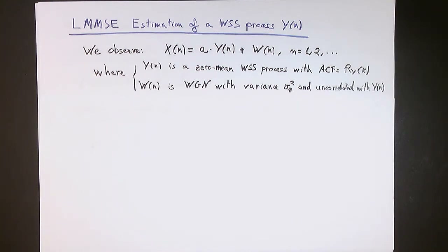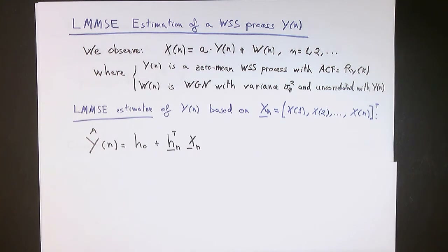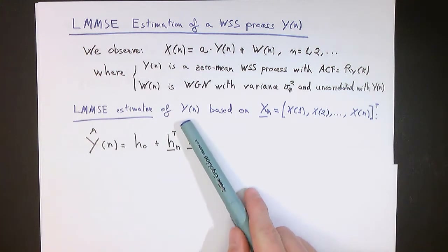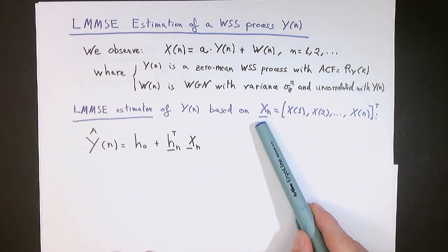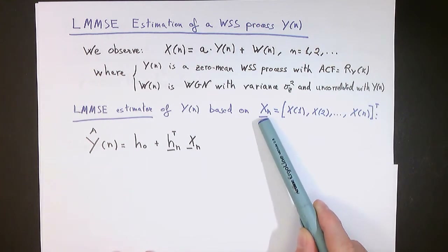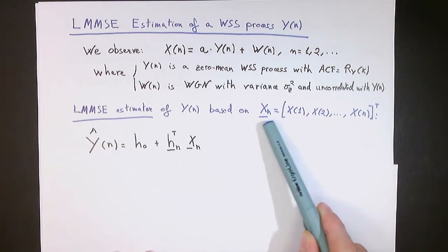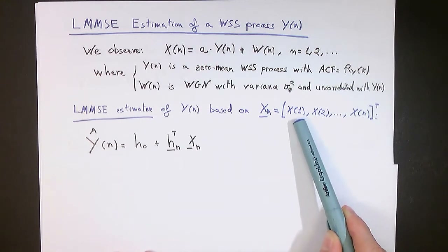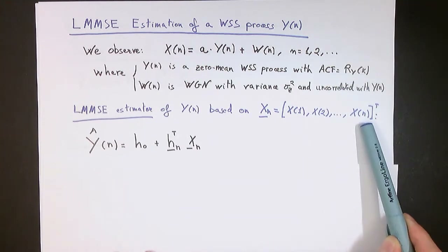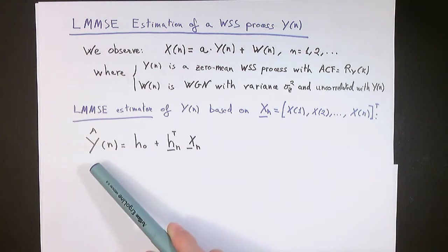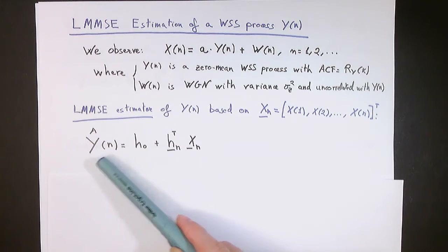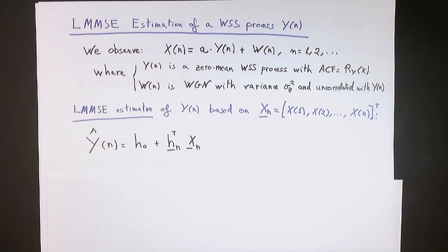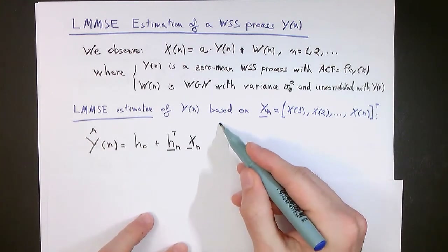Imagine that at a given time n, we would like to obtain the LMMSE estimate of the nth sample of the process y, based on the observations of all samples of the process x up to that time. We collect all the observations of x into one vector called x of n, which contains all the samples from x of 1 to x of n. As we already know from LMMSE theory, the LMMSE estimator of y of n will have the following form, where the coefficients will be obtained accordingly.